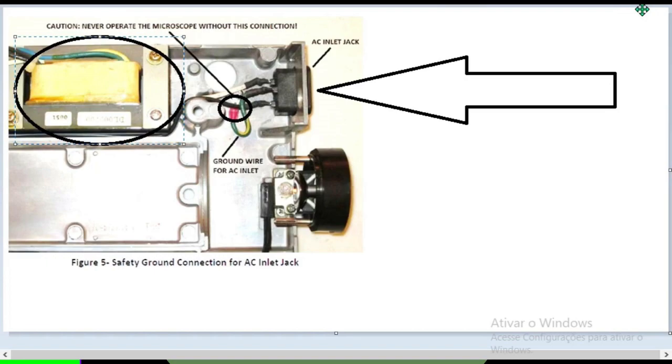São dois fatores importantíssimos. O sistema de aterramento primordialmente protege o ser humano contra um curto ali. Porque a energia elétrica procura o caminho que tem menos resistividade, ou seja, o caminho que tem mais condutância elétrica, menos impedimento.